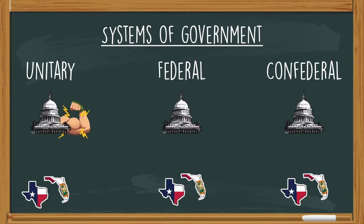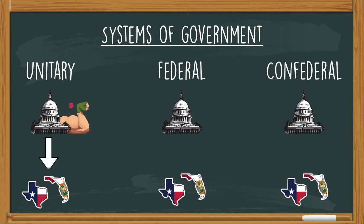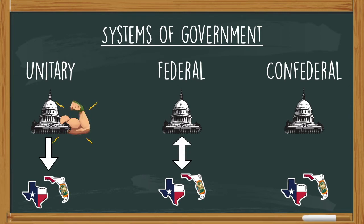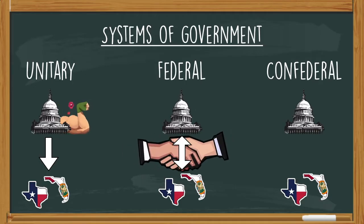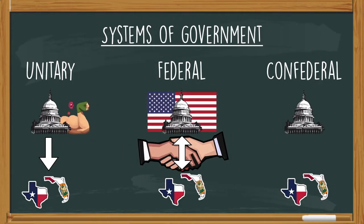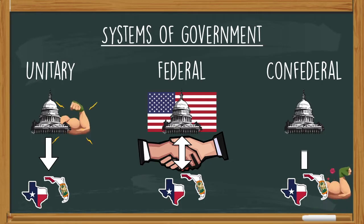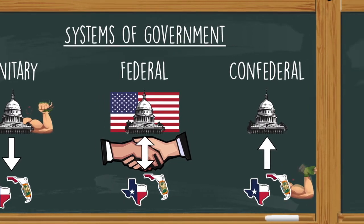In a unitary system, the central government has the power — they tell the regions what to do, and the regions have to follow. In a federal system, we share power. The central government has authority, but the regional governments are allowed to do their own thing — we have this in America. And in a confederal system, the regional governments have all of the power, and they tell the central government what to do.